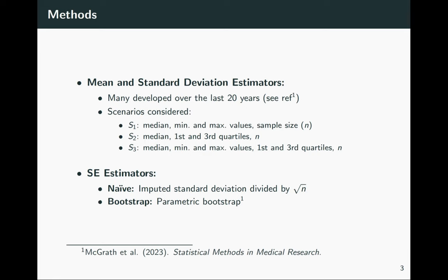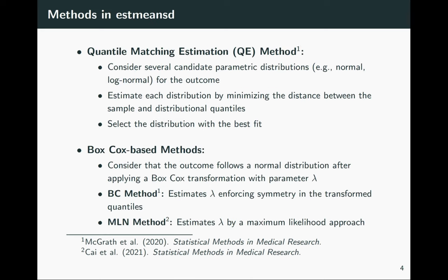In some recent work I've explored, along with some colleagues, simple approaches based on parametric bootstrap to estimate the standard error of these imputed means. The smeandsd package incorporates both of these types of standard error estimators, as well as a few different mean and standard deviation estimators developed in the literature. In particular, the package considers two methods: the first is quantile matching estimation, or QE for short.